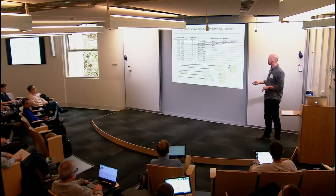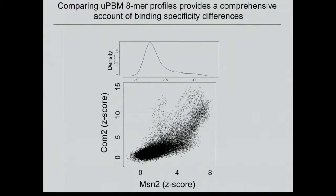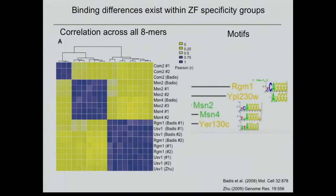Basically, there's richness in this data that is not captured by the simple PWM model. I have these five factors - this is from the Hughes Lab paper - just the logos I originally saw. When I came to this, knowing something about zinc fingers, I thought those seem kind of similar, but are those differences in the logo actually real? Is there more there than meets the eye? We took the 8-mers, simply correlated them and asked, do they group into specificity clusters? And sure enough, they grouped into three different specificity groups.